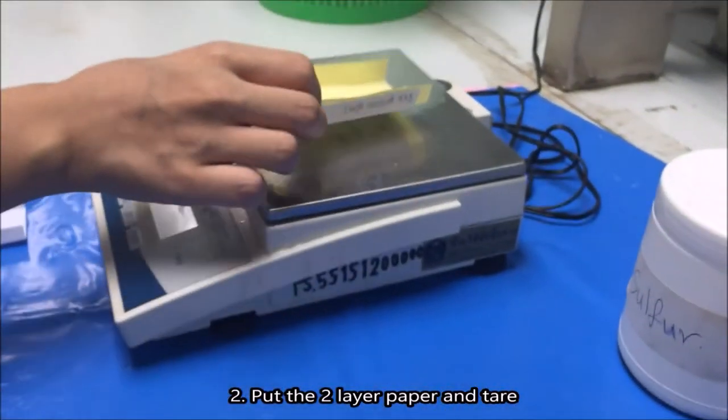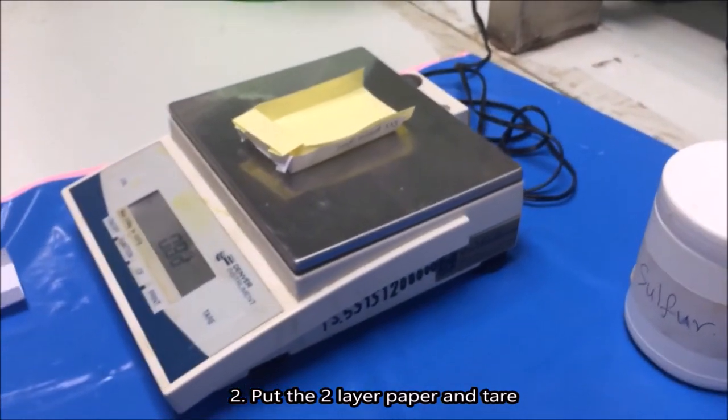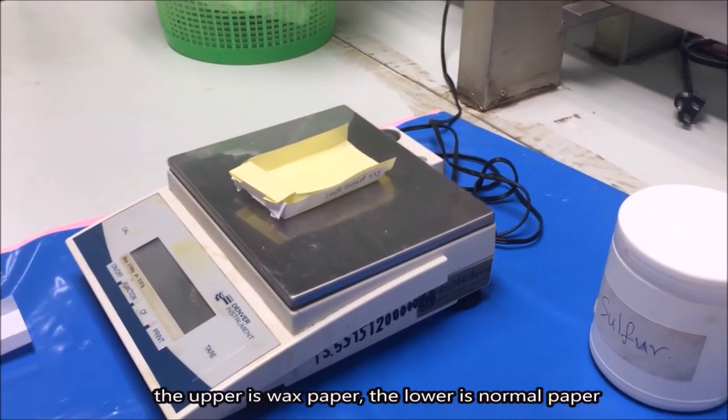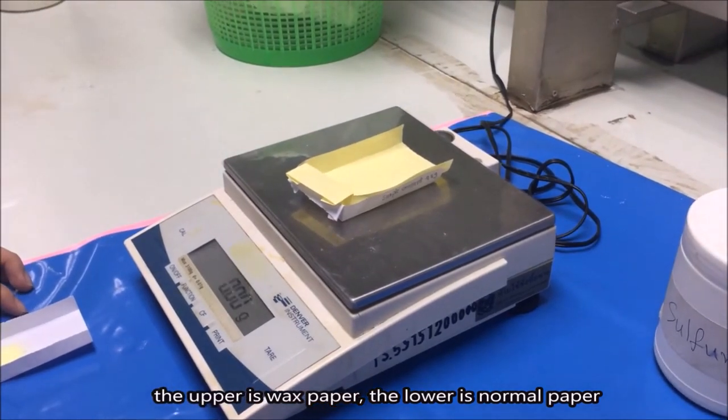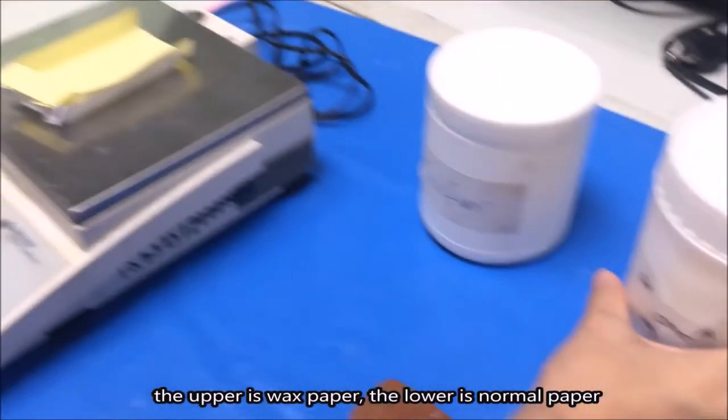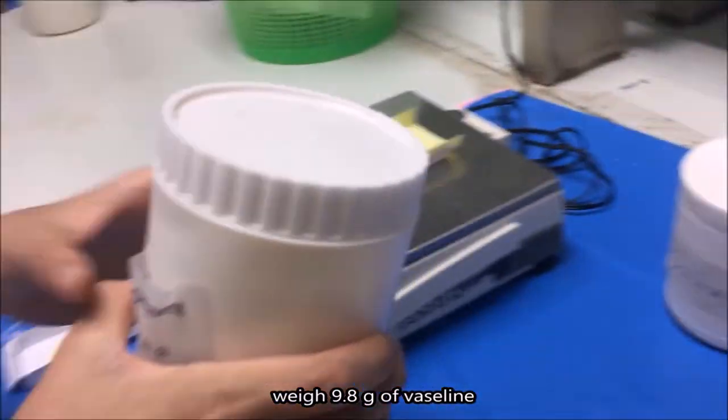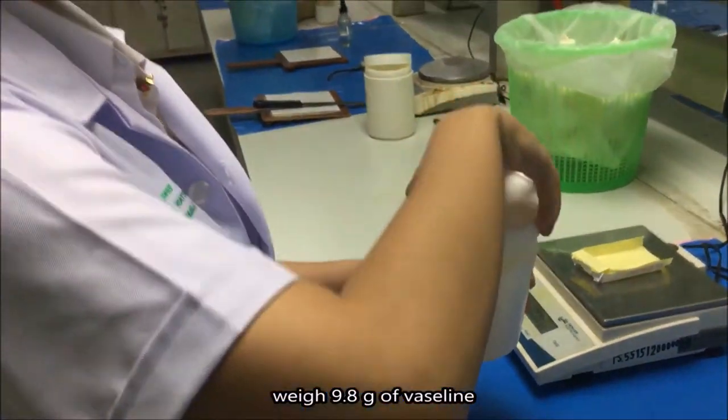Step 2 - Put the 2-layer paper and tare. The upper layer is wax paper, the lower layer is normal paper. Triple check. Weigh 9.8 grams of vaseline.